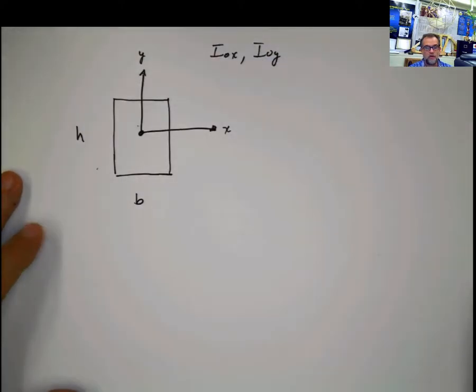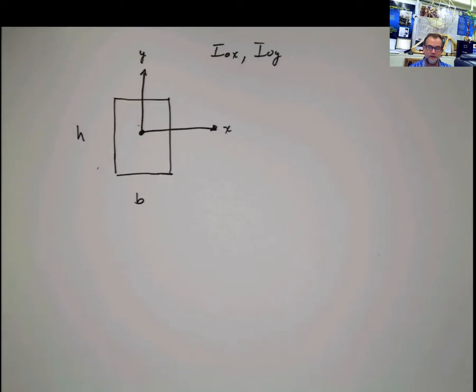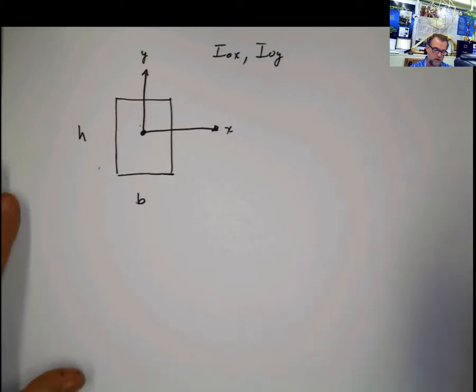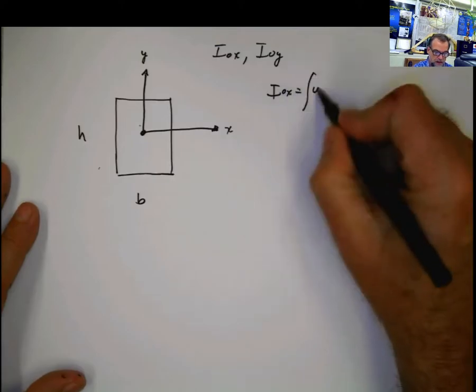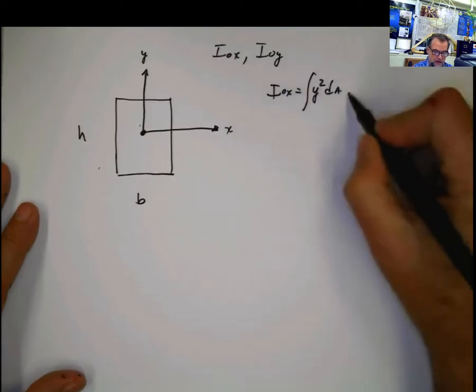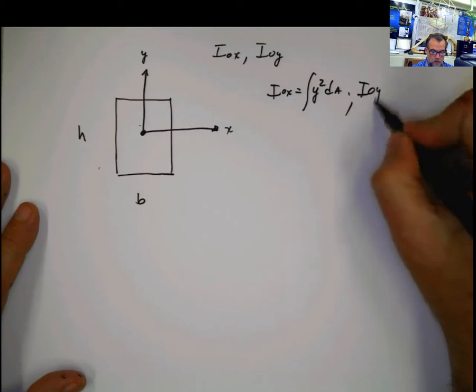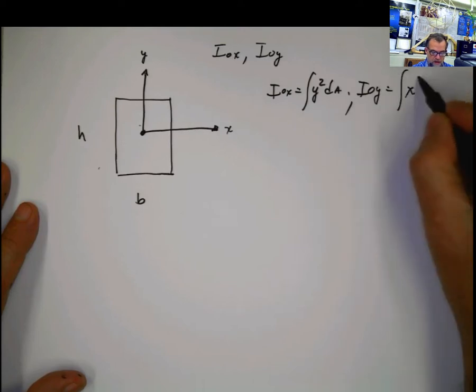The next thing that you have to know, and is very important, is remembering what is the formula for moment of inertia. Moment of inertia is the integral of y squared dA, and moment of inertia with respect to y is the integral of x squared dA.